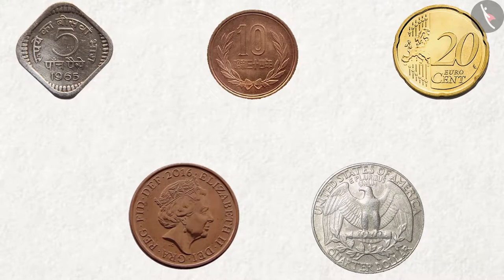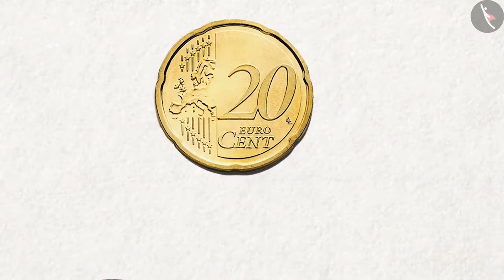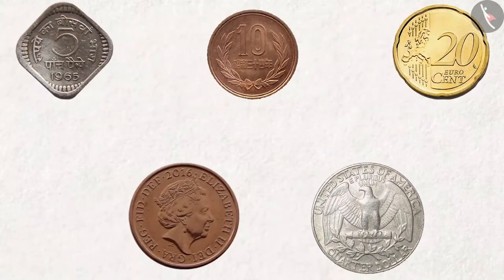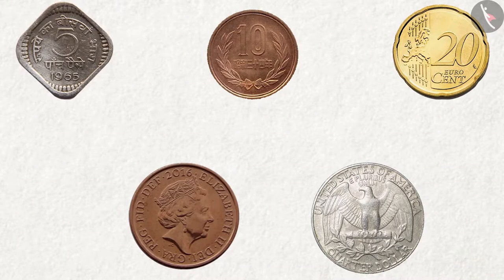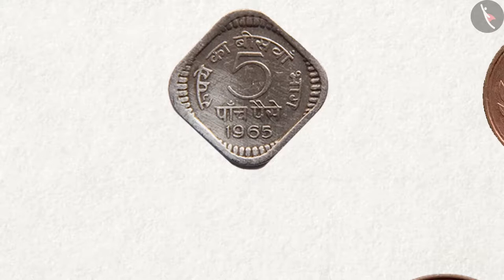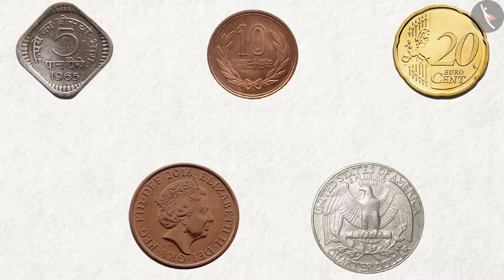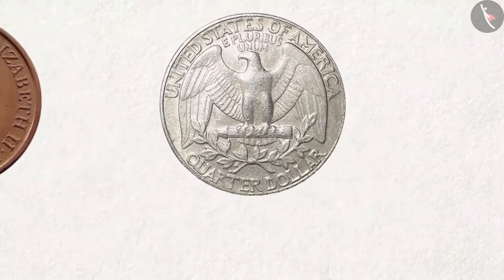Which of these coins is 20 euro cents? This yellow coin is of 20 euro cents. Which coin is of 5 paise? This coin is of 5 paise. Now tell me, which is a quarter dollar coin? This is a quarter dollar coin.